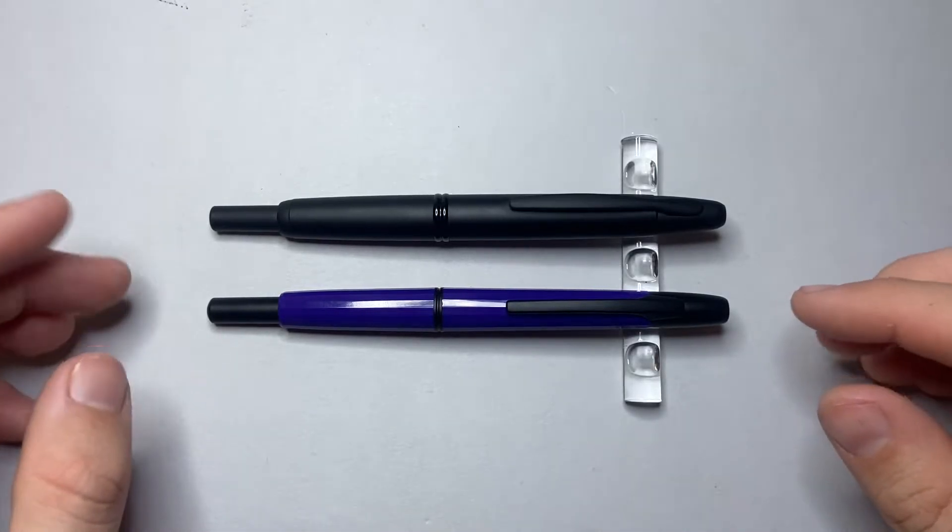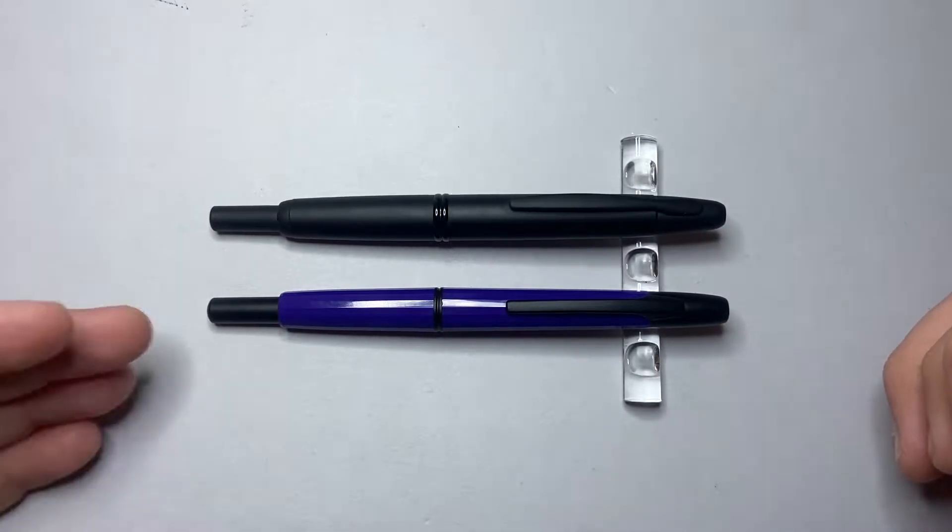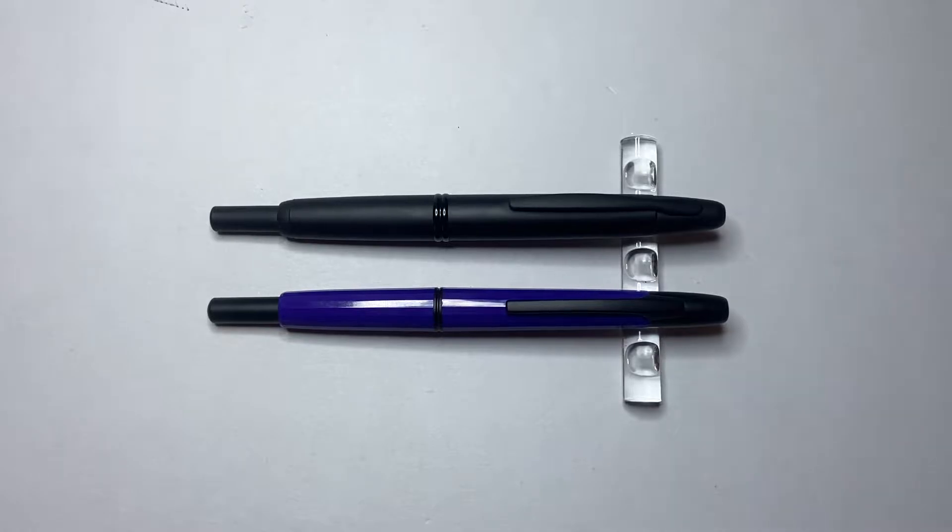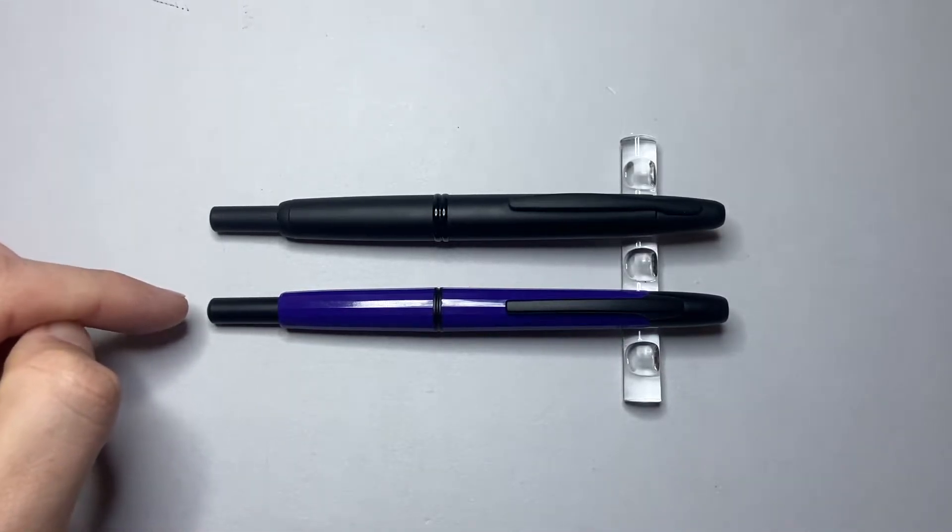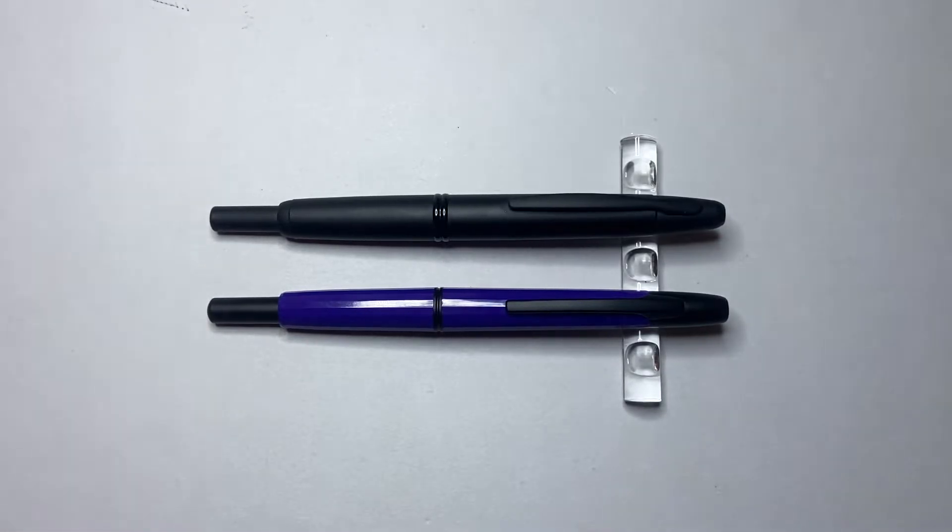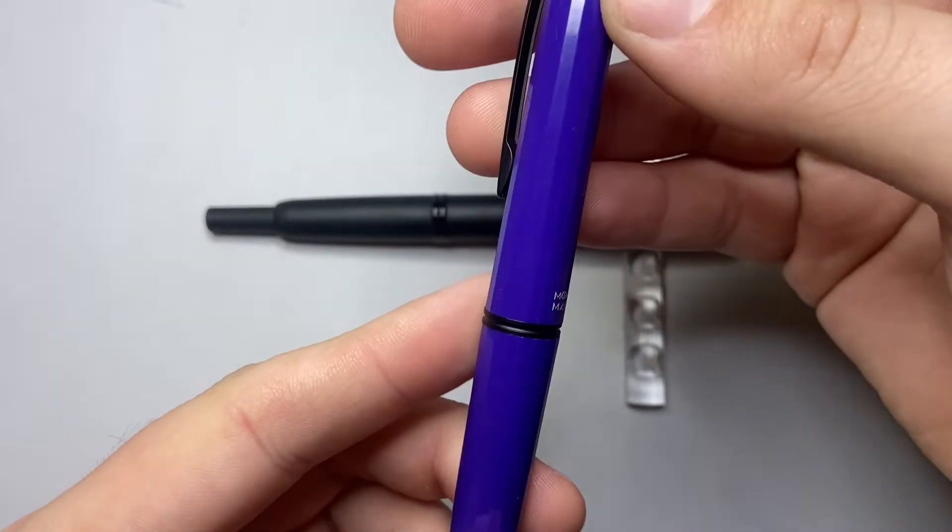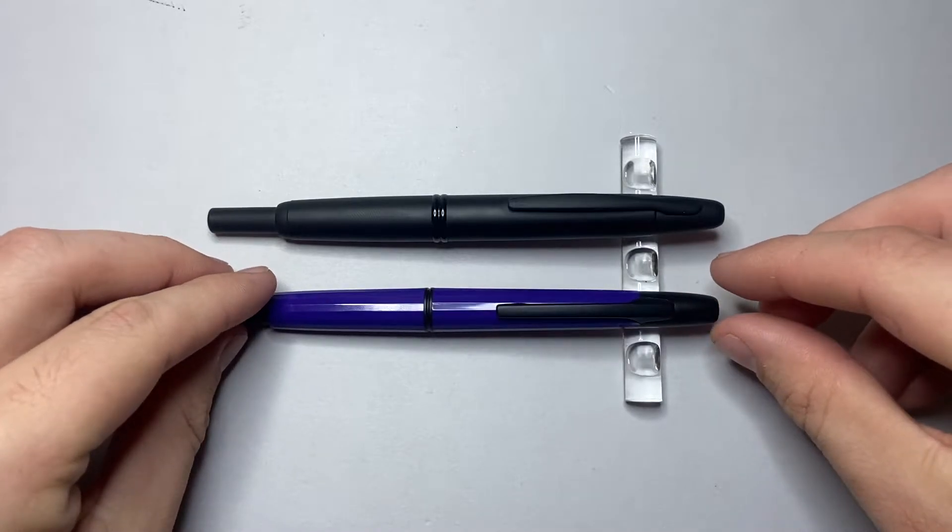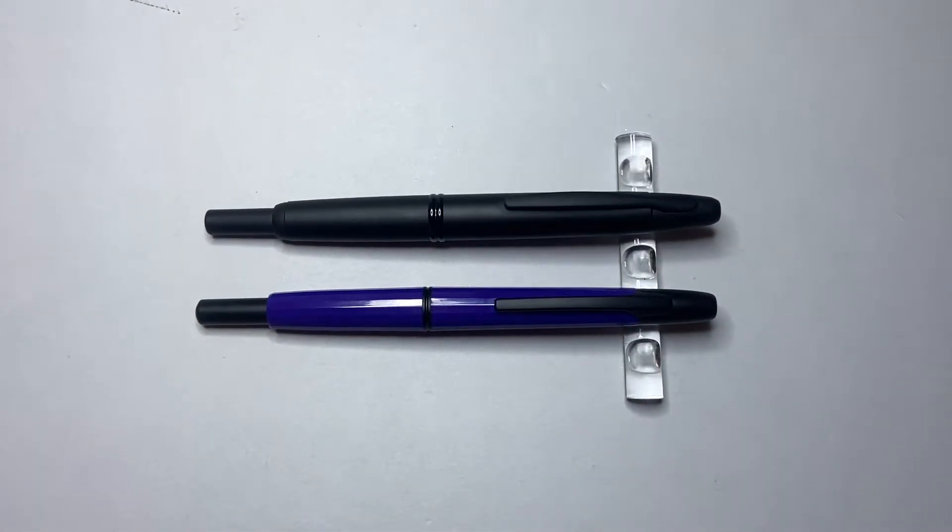And in the last little while, Moonman and Mahjong have released this, which is the A2 fountain pen. Now I have both of these in fine nibs. The Pilot is a gold nib and the Moonman is a steel nib. Now I'm saying Moonman instead of Mahjong because this pen is still labelled as Moonman, but they are the same brand. Mahjong is the newer brand name of Moonman.